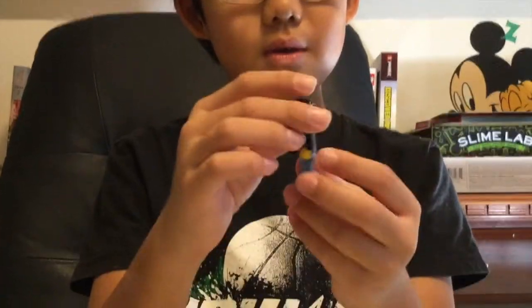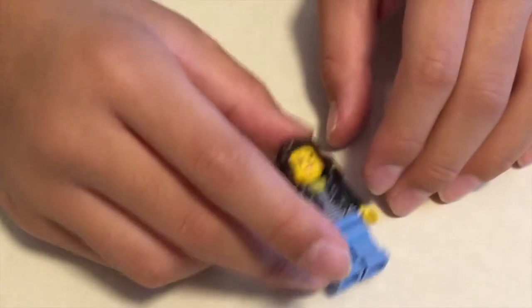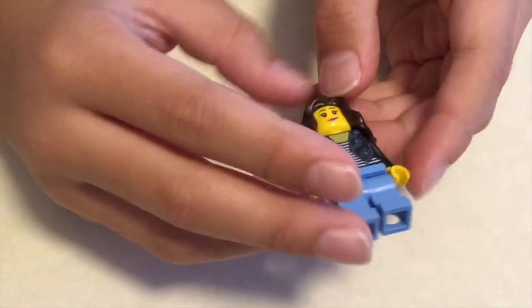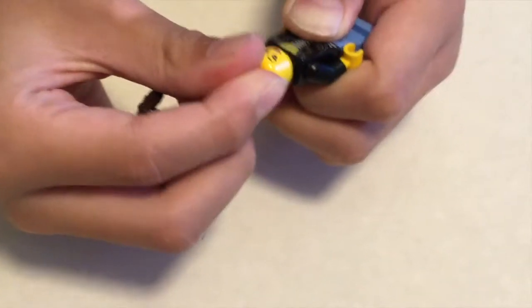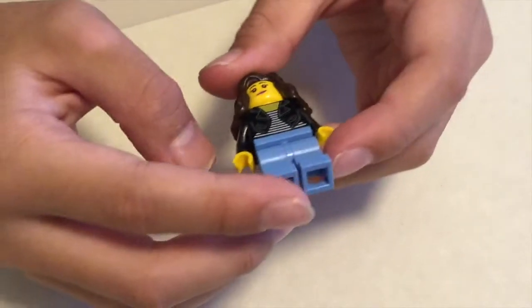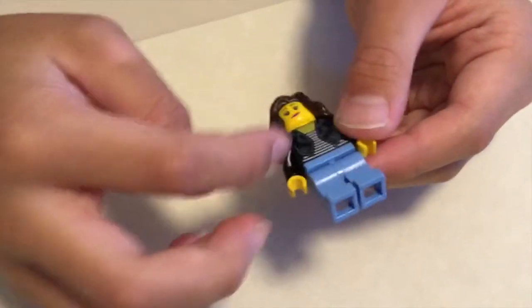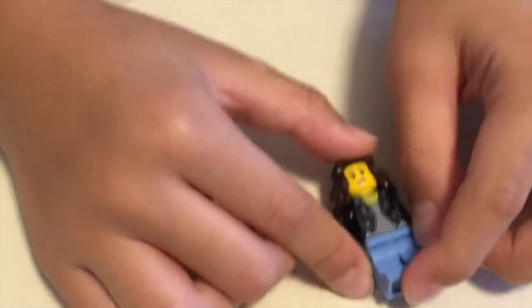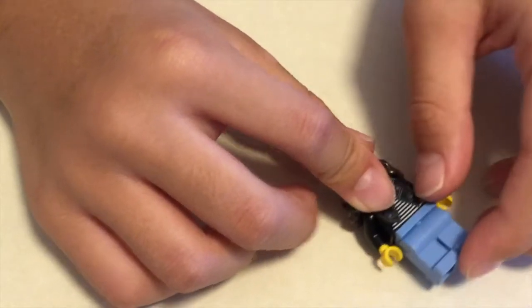We're on Abigail. I use this hair piece that comes on a lot of minifigures like Miss Marvel. I also use this head piece that comes in a lot of LEGO City sets. Then I use Nya from Ninjago, the Ninjago movie sets. I use this torso with black arms, yellow hands, and these light bluish legs.